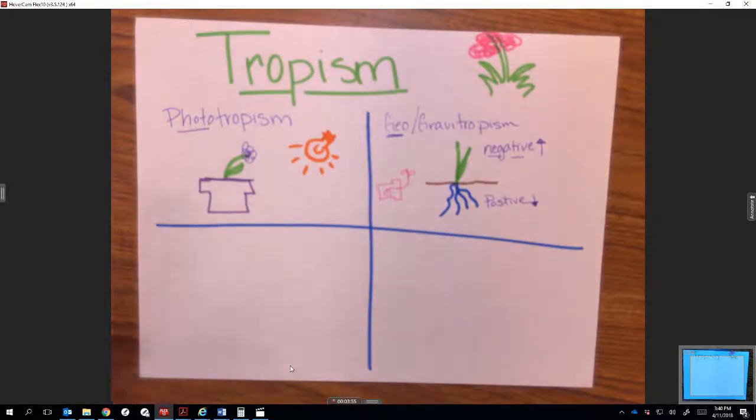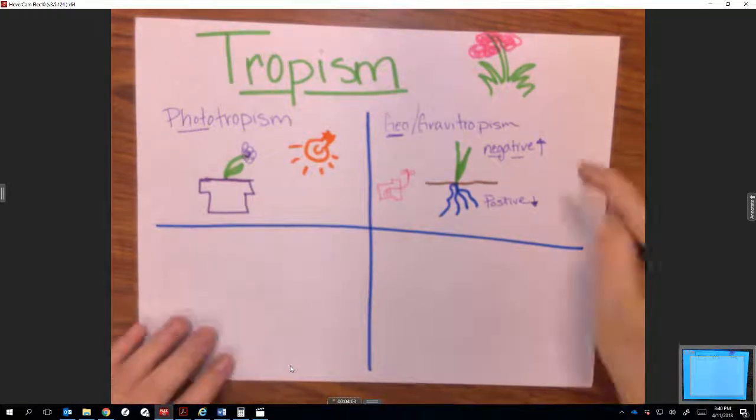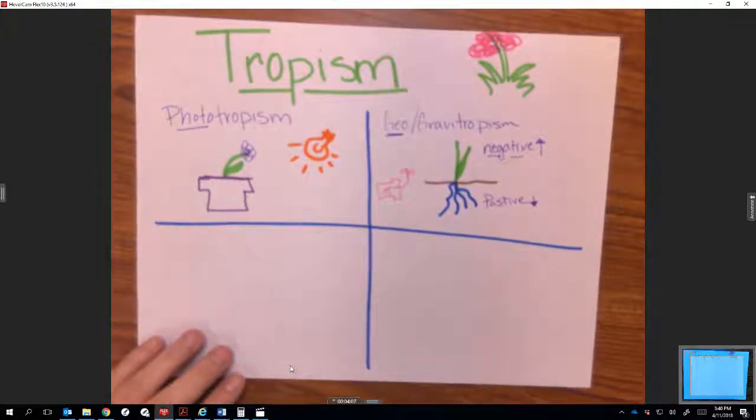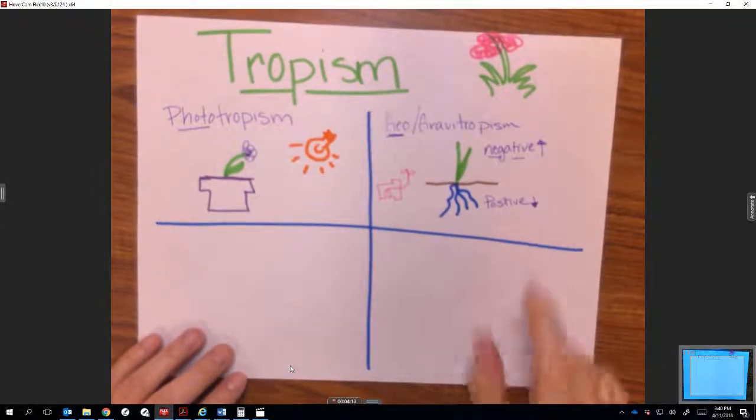But when the seed emerges, when the baby plant emerges from the seed, the stem knows to go away from gravity, negative geotropism. And the roots know to grow down towards gravity, which is positive geotropism.